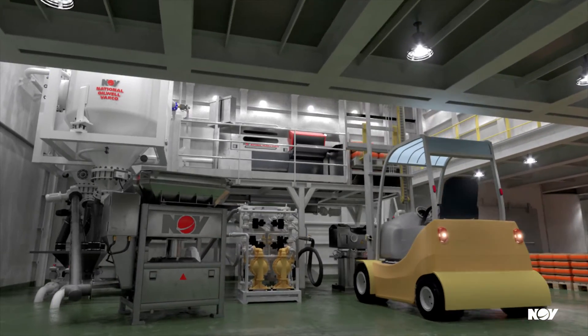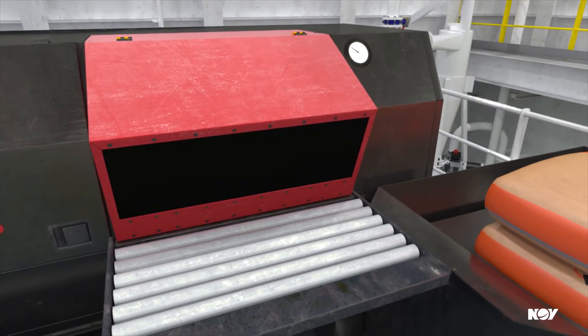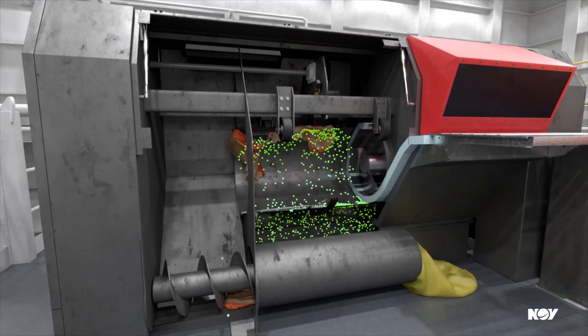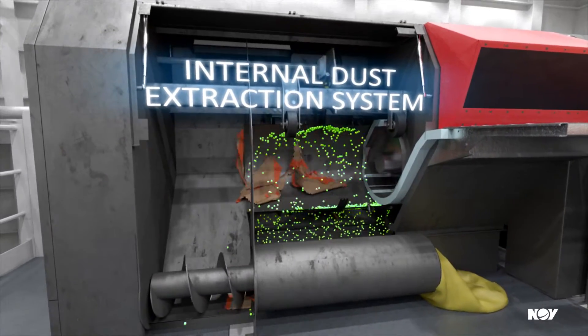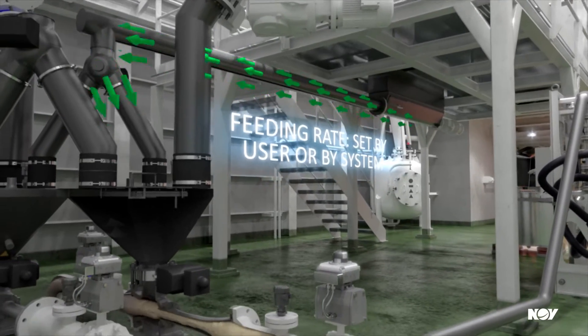Sacks are added into the mud mixing line through the sack cutting unit. The sack and content are separated in the unit in a dust free environment. The chemicals are fed into the mud by a dosing conveyor and into the mud hopper.